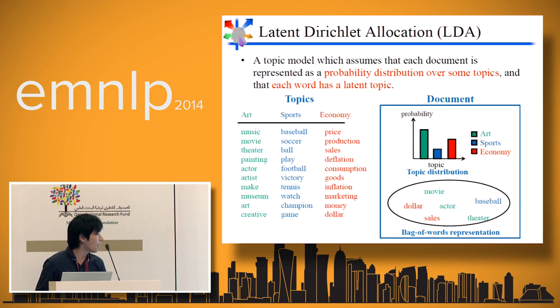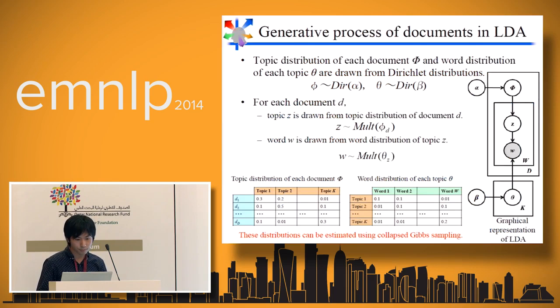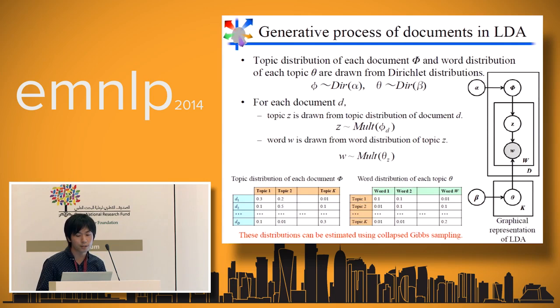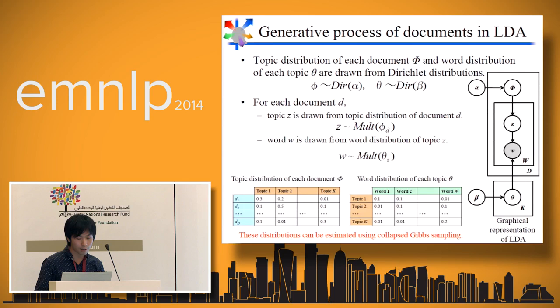For example, a movie has a topic about the art. This is the generative process of documents and graphical representation of LDA. In LDA, topic distribution of each document phi and word distribution of each topic theta are drawn from different distributions. For each document, topic Z is drawn from topic distribution of document D and word W is drawn from word distribution of topic Z. These distributions, theta and phi, can be estimated using collapsed Gibbs sampling.